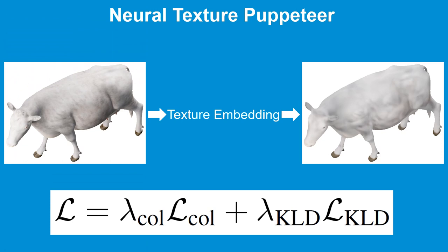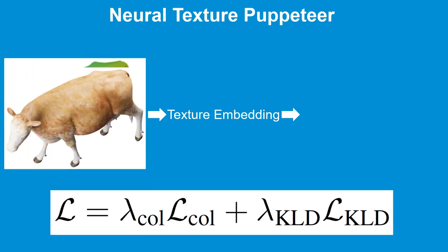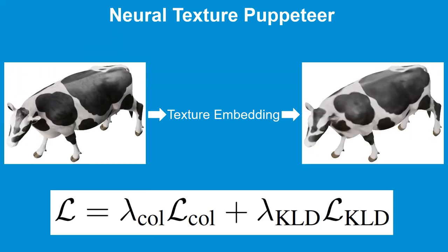The NNO-PCS map together with a color map are input to our texture pipeline. A texture encoder computes a global texture embedding, regularized by the Kullback-Leibler loss, while the decoder reconstructs the color map.